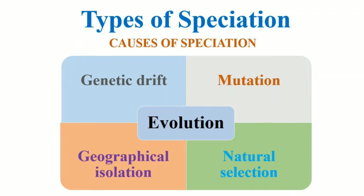What are the causes of speciation? First of all, genetic drift. Genetic drift is basically a change in the allelic frequency of a population due to a chance event. Some individuals can die due to a disease, and some individuals can immigrate or emigrate. In both cases, the allelic frequency of the population will change due to a chance event — and we call this genetic drift.